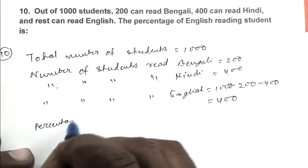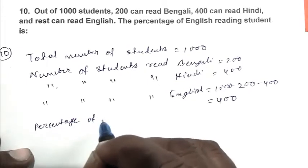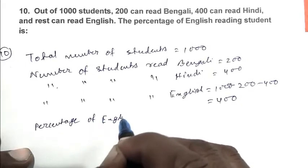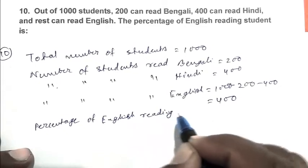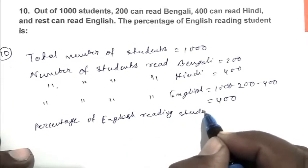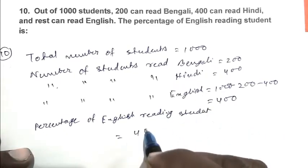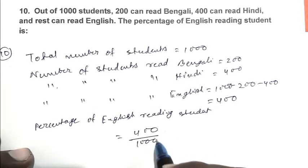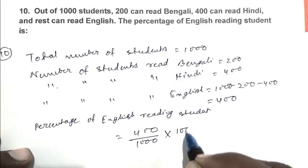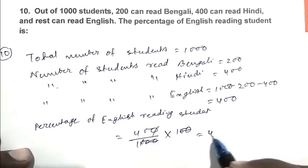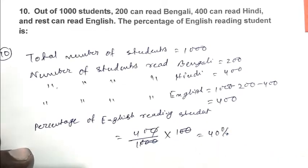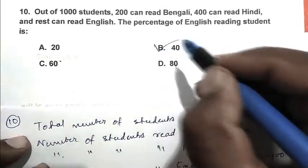Percentage of English reading students equals 400 by 1000 multiplied by 100, which is 40%. So, B is the right answer.